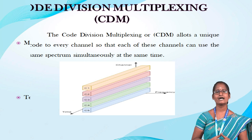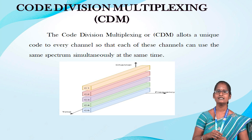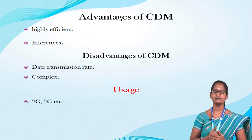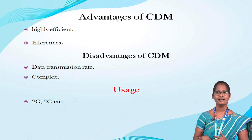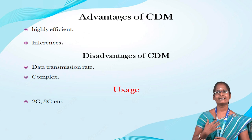The third type is Code Division Multiplexing. Code division multiplexing assigns a unique code to every channel so that all channels can use the same spectrum simultaneously at the same time. We can see the code division multiplexing involves time, frequency, and the channel. The advantages of CDM are that it is highly efficient and faces fewer interferences. The disadvantages are that the data transmission rate is slow and it is very complex. CDM is used in cell phone spectrum technology and in 2G and 3G technology.